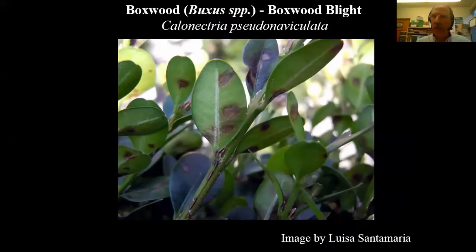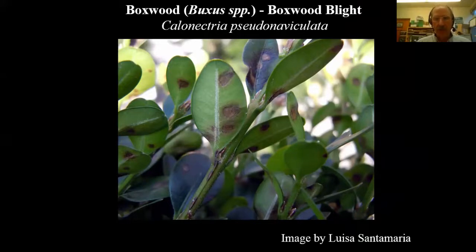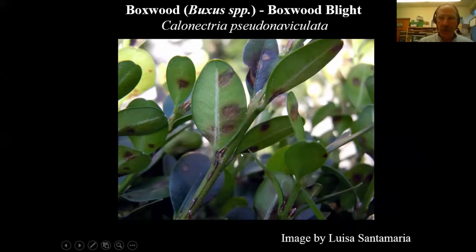The fungus causing boxwood blight is Calonectria pseudonaviculata. It is primarily a leaf spotter — you see a dark leaf spot where sometimes the center turns tan and the outer leaf turns light brown. In addition to the leaf spots, there are stem lesions with a nice dark border, and those stem lesions are what characterizes this particular plant disease.